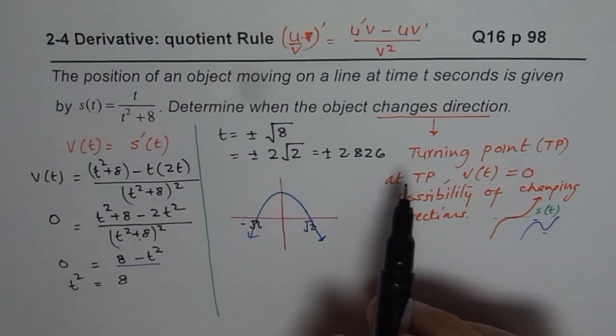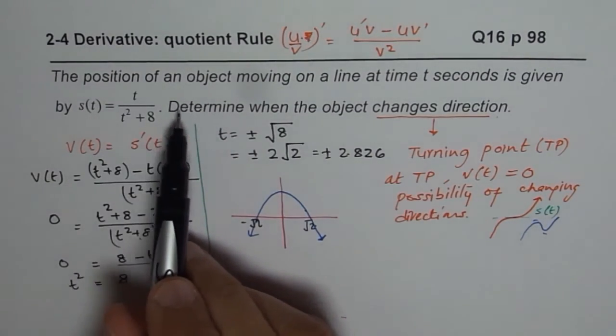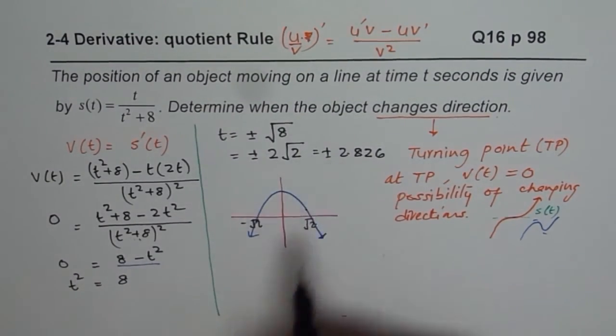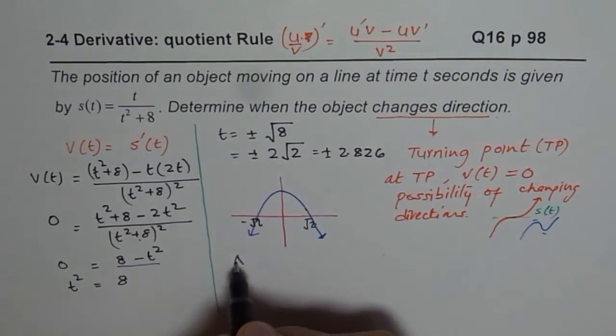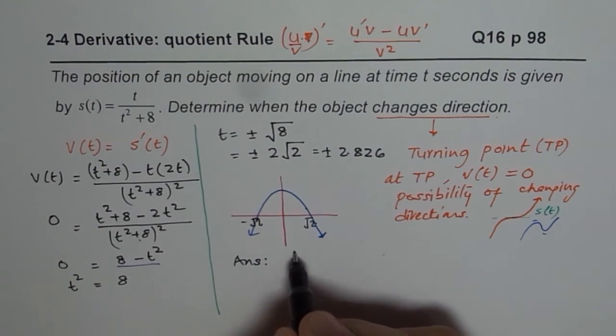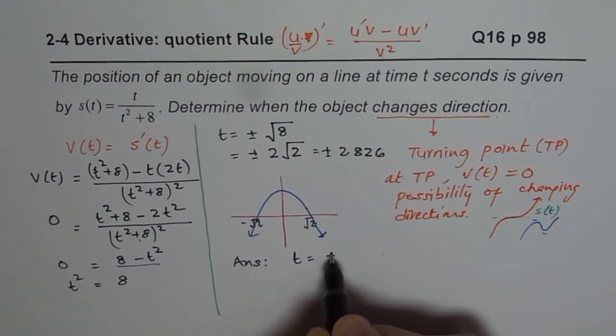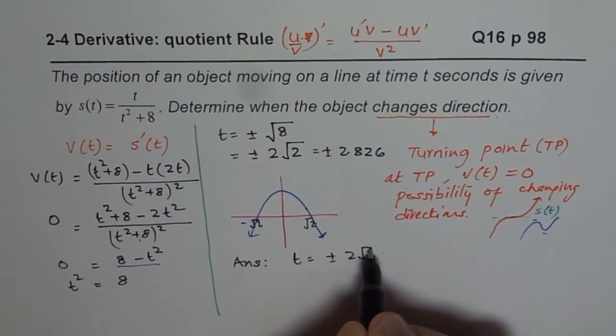Since we are not really given whether t is greater than or equal to 0, I am writing two answers. So, my answers for the object changing direction will be t equals to plus and minus 2 square root 2 seconds.